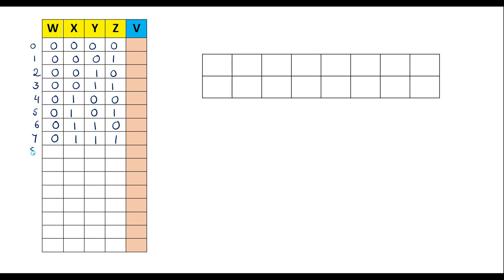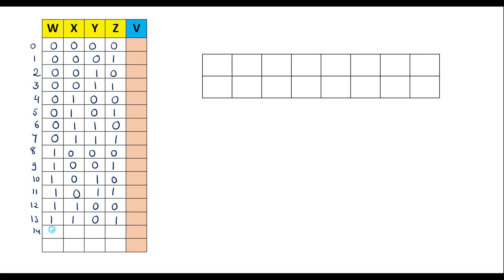Continuing the truth table: 9 is 1,0,0,1; 10 is 1,0,1,0; 11 is 1,0,1,1; 12 is 1,1,0,0; 13 is 1,1,0,1; 14 is 1,1,1,0; and 15 is 1,1,1,1.